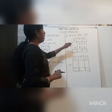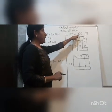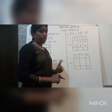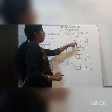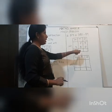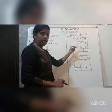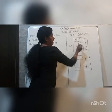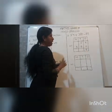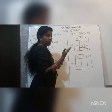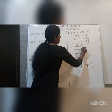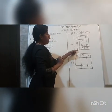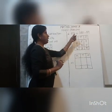Let us see one more example. We have 59 plus 380 minus 89. Step 1 is to add the two numbers: 59 plus 380. So 9 plus 0 is 9. Then 5 plus 8 is 13, we write 3 and carry over 1. Then 0 plus 3 plus 1 is 4. So we get 439 after adding these two numbers.